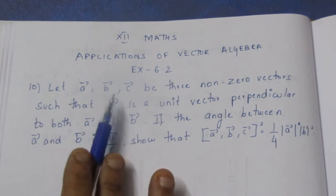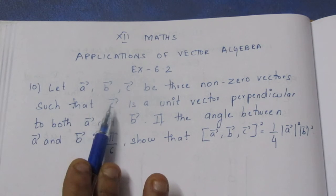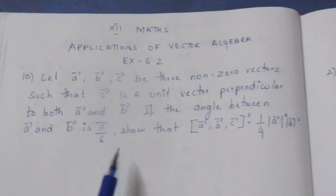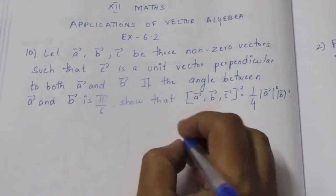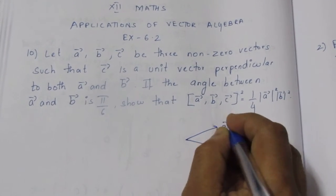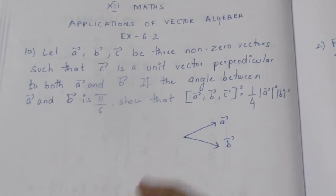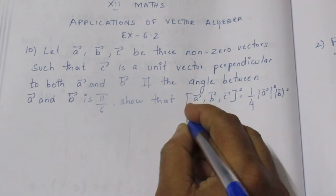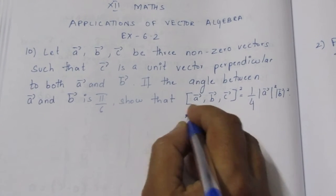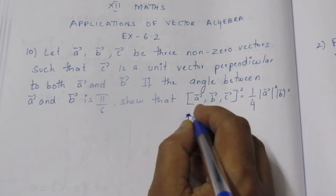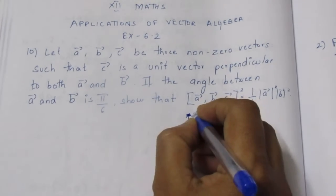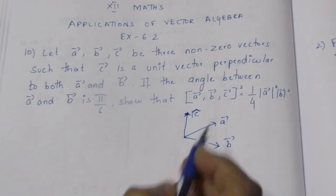We have 3 vectors: a vector, b vector, c vector. c vector is perpendicular to both a vector and b vector — that is, c vector is a unit vector. Since it is a unit vector, modulus of c vector is equal to 1.